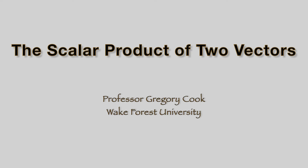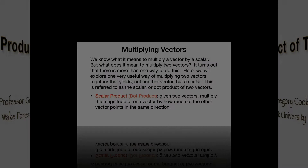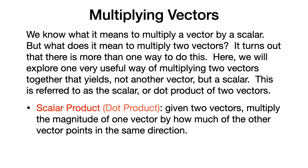In this module, we will consider the scalar product of two vectors. We know what it means to multiply a vector by a scalar, but what does it mean to multiply two vectors? It turns out that there is more than one way to do this. Here, we will explore one very useful way of multiplying two vectors together that yields not another vector, but a scalar.